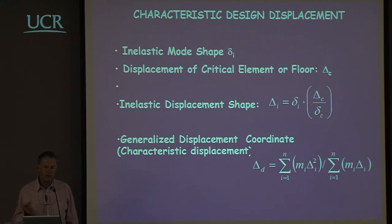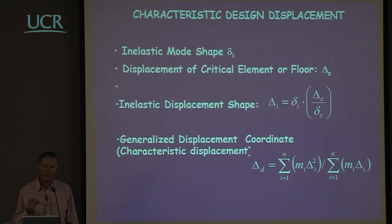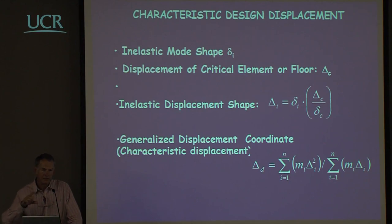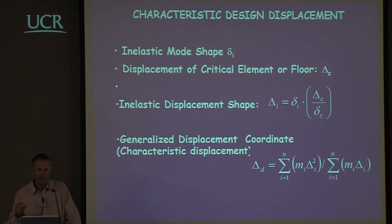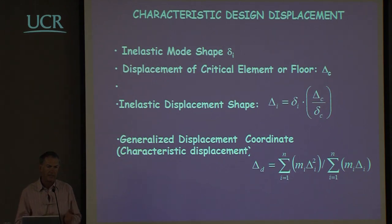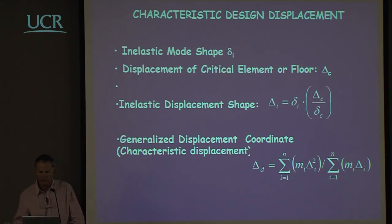We then determine what is likely to be the critical aspect of the design in terms of the member — it could be the critical floor of a building or the critical column of a bridge — and we determine the displacement of that particular element at the performance limit state, whether serviceability or damage control. If we can determine that numeric value, we can scale up the inelastic mode shape to determine the design displacements at all levels of the building or all parts of the bridge.